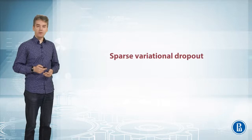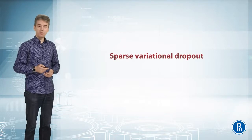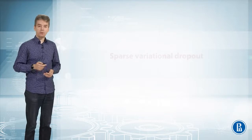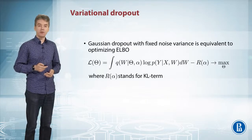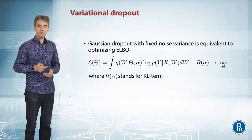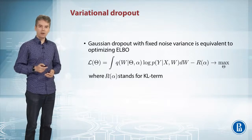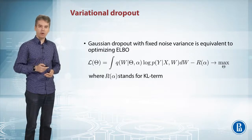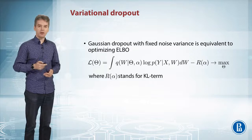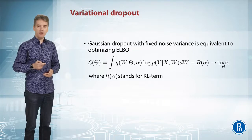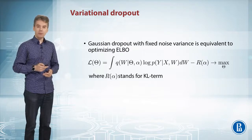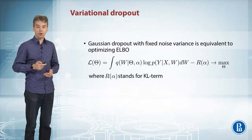In the previous lecture we showed the equivalence of Gaussian dropout with a special kind of variational Bayesian inference. We proved that Gaussian dropout really optimizes the following ELBO. In this ELBO the second term doesn't depend on θ, so it can be ignored if we optimize only with respect to θ.